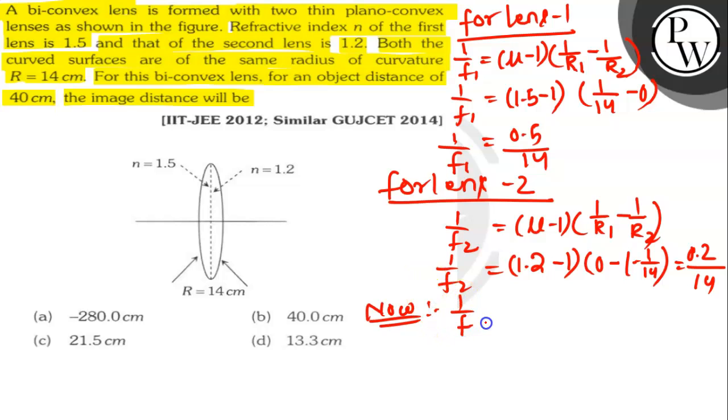Now 1 by f equals 1 by f1 plus 1 by f2. We will add both of them for lens 1 and for lens 2. So 1 by f will be 0.7 upon 14 after adding both of these.